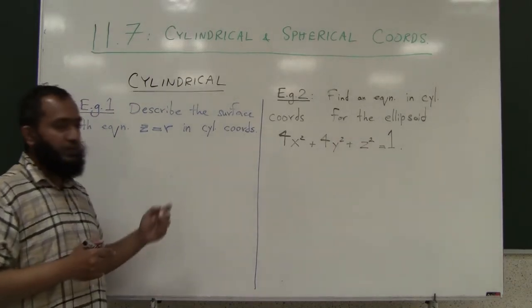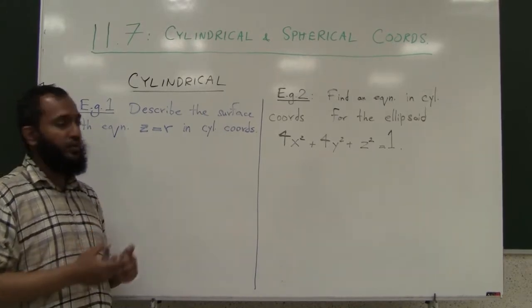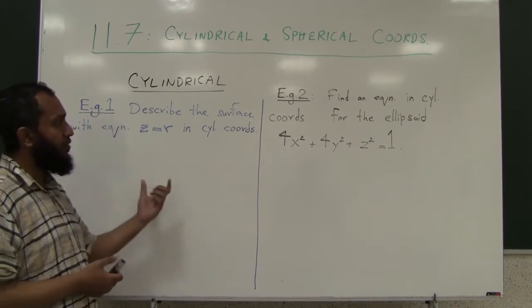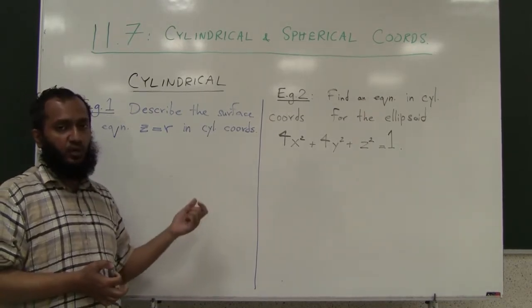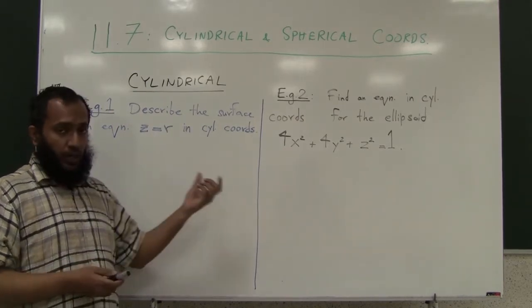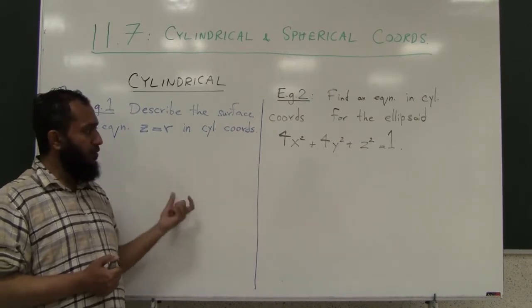Welcome back. We saw in the last lecture the conversion back and forth between the cylindrical and rectangular coordinates. I didn't do any examples of that because cylindrical coordinates is essentially just the polar coordinates with the z-axis glued on top, so you can review converting between the coordinates and do some practice.